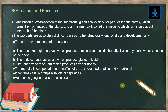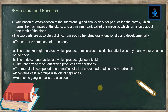Structure and function: A cross-section of the suprarenal gland shows an outer part called the cortex, which forms the main mass of the gland, and a thin inner part called the medulla, which forms only about one-tenth of the gland. The two parts are absolutely distinct structurally, functionally, and developmentally. The cortex is composed of three zones: the outer zona glomerulosa, which produces mineralocorticoids that affect electrolyte and water balance of the body.